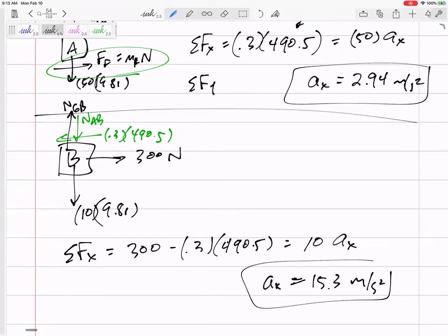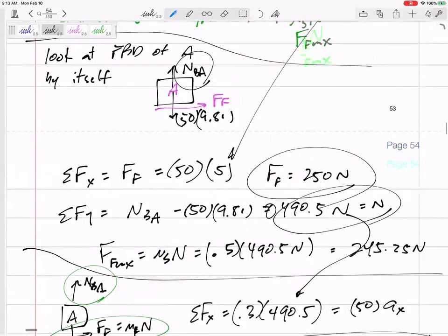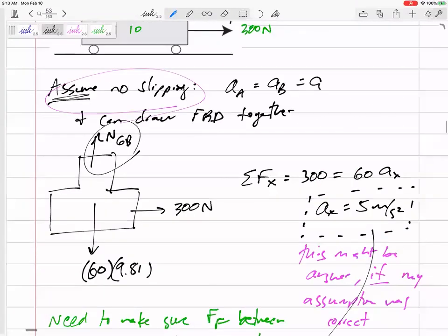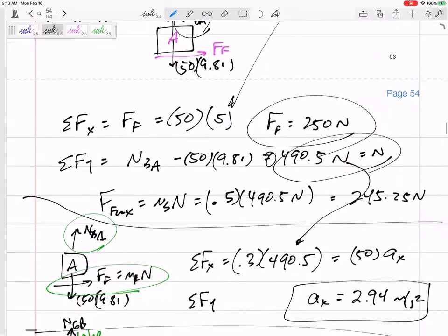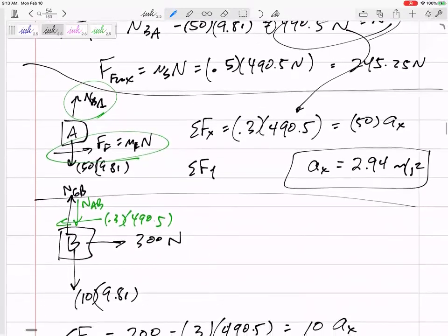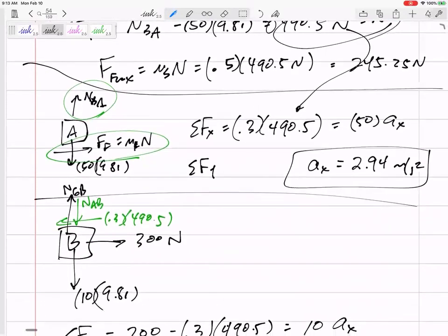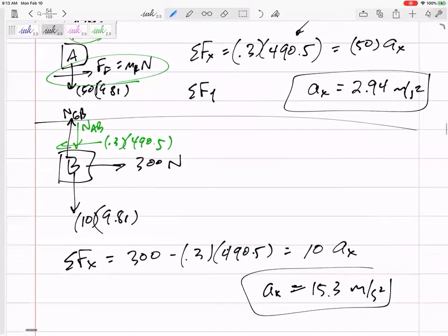Do those values make sense? I was hoping they would be moving together. And if they were moving together, they'd be accelerating at five meters per second squared together. But there's not enough friction. Maybe the coefficient's not large enough. So what's really happening is block B is getting pulled at 15.3. A is only getting pulled at 2.94, but it's still coming forward.